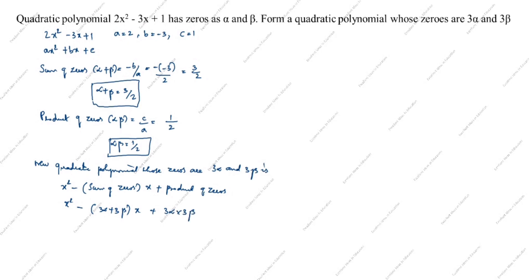In the sum term, 3 is common, so we take it outside: 3 times (alpha plus beta). For the product term, 3 times 3 equals 9, giving us 9 alpha beta.